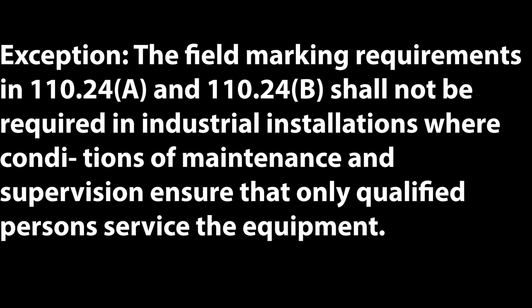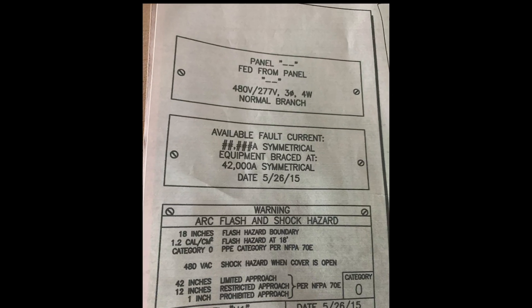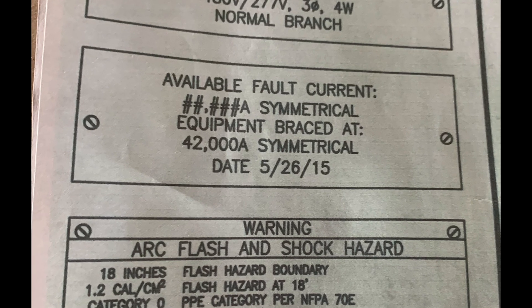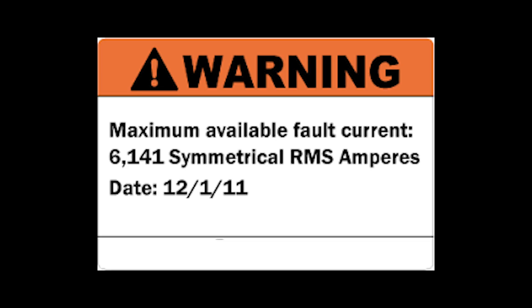Now it's not required in dwelling units and there are exceptions as well, which I'll go over in future videos, but typically it is going to be required to get a sign off on your job. A lot of engineers will put a spec right on the plans that tells you exactly how to label it with a Mylar label or something similar. And if they don't, it's still required — you can get a sticker and you can hand write the data right on it and slap it on there. But you don't want to fail inspection, so you want to make sure that you're getting this stuff on there. It's pretty important.